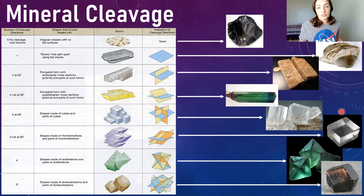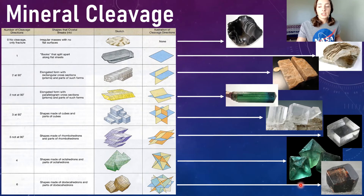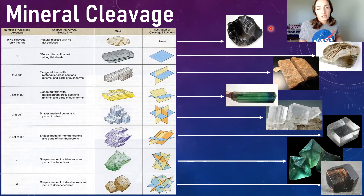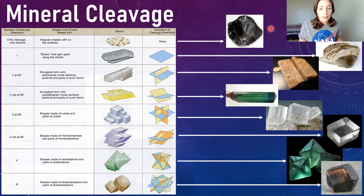Next we have octahedral cleavage shown in fluorite specimens, defined by four planes of cleavage. Then we have dodecahedral minerals such as garnet, which have six planes of cleavage. One more to mention for cleavage: a mineral that doesn't break along cleavage planes and instead has conchoidal fracture, due to a lack of regular atomic crystal structure — it breaks along unpredictable planes. This is typically seen in glass, which breaks in a conchoidal fracture pattern because it has an amorphous rather than crystalline structure.